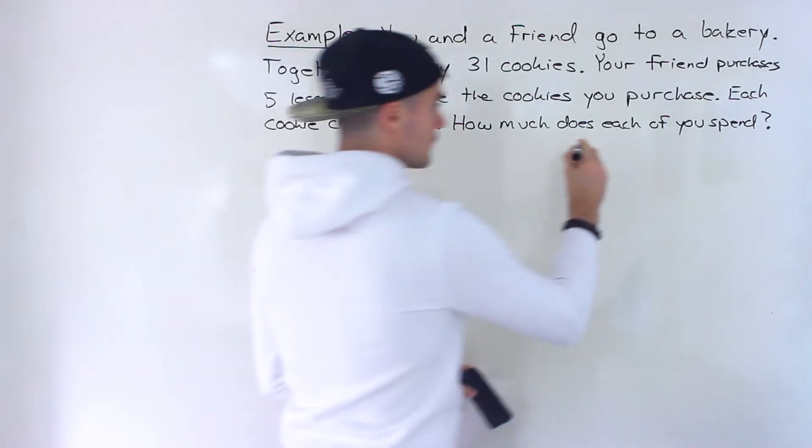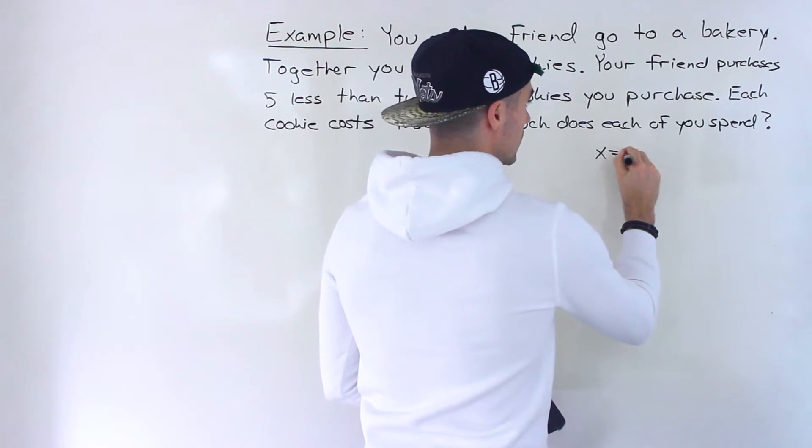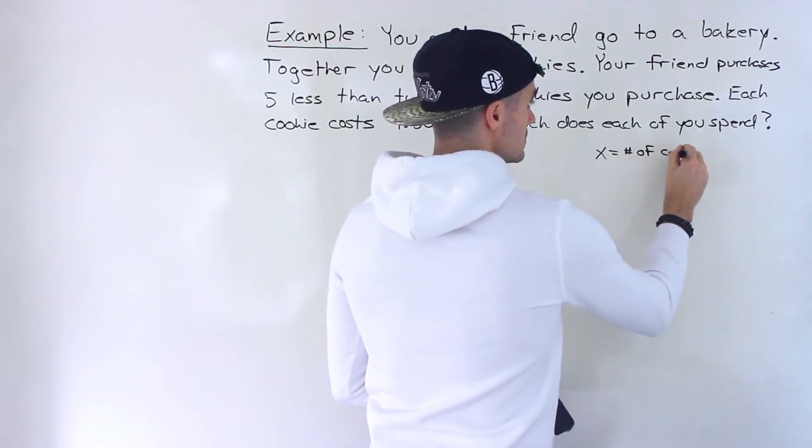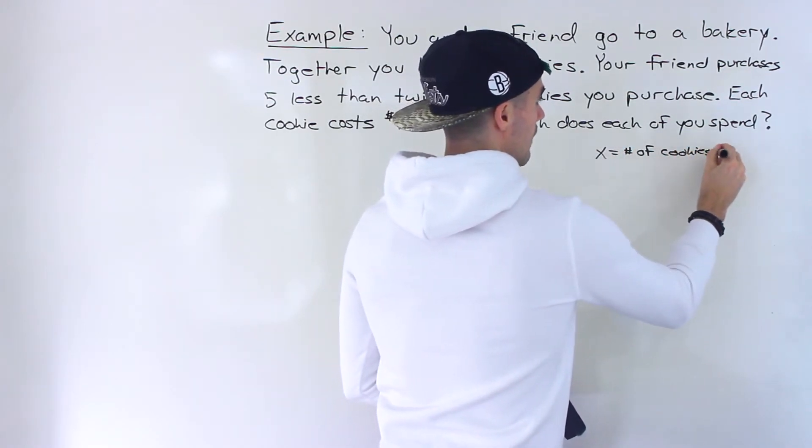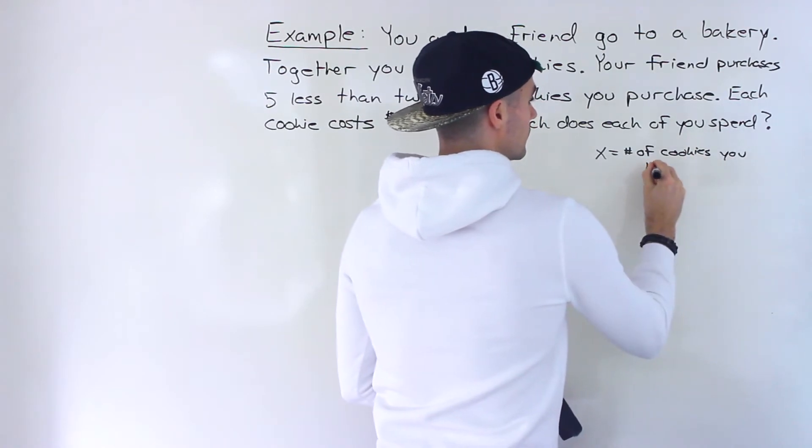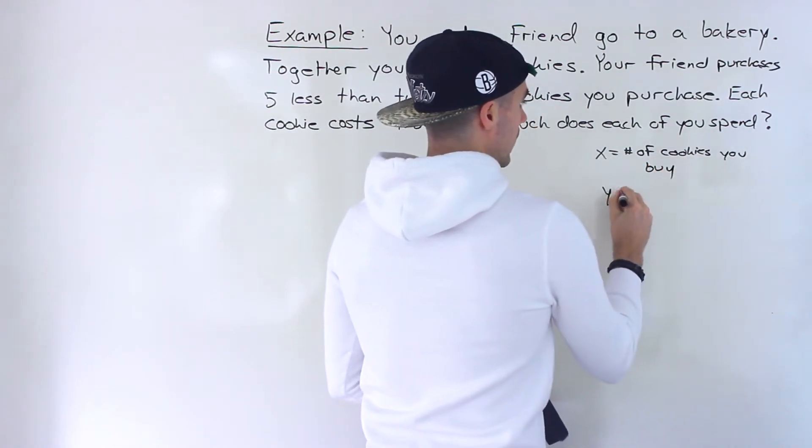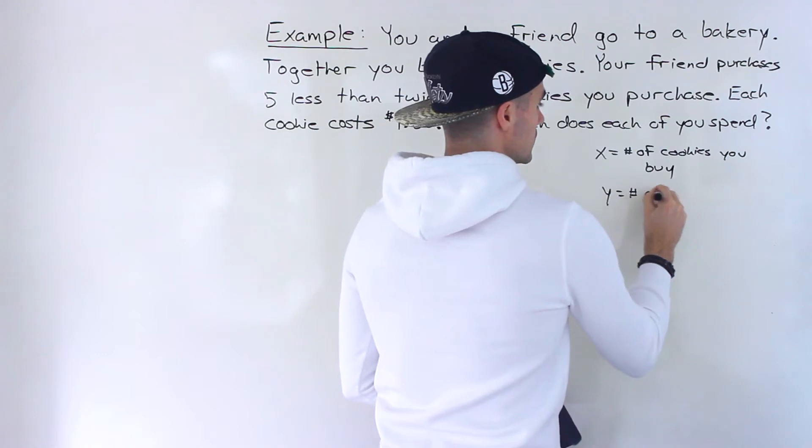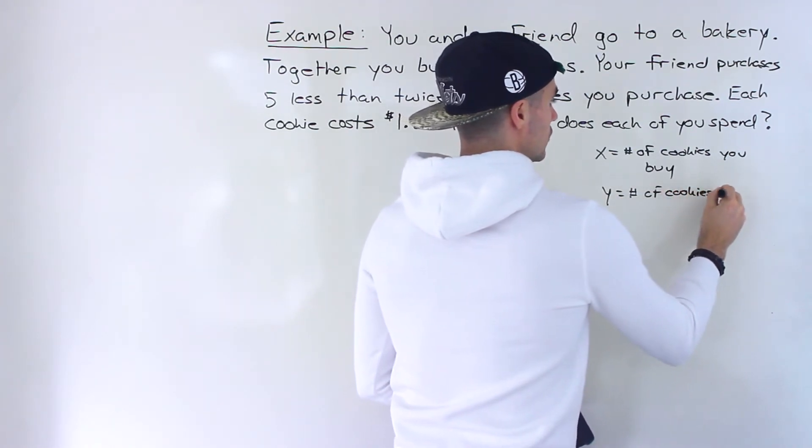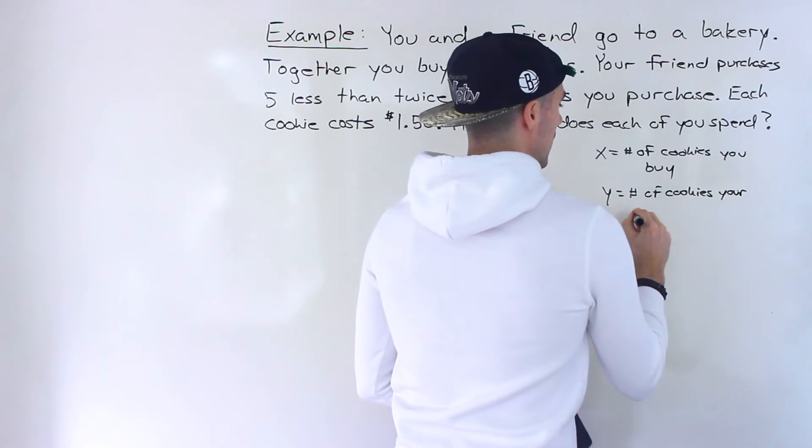So I'm going to introduce two variables. I'm going to let x equal the number of cookies that you buy. And then I'm going to let y equal the number of cookies your friend buys.